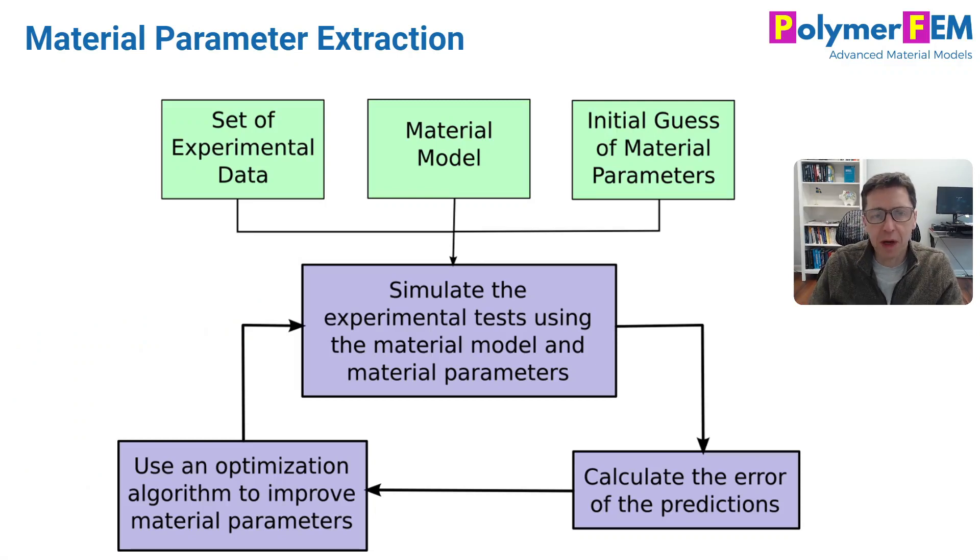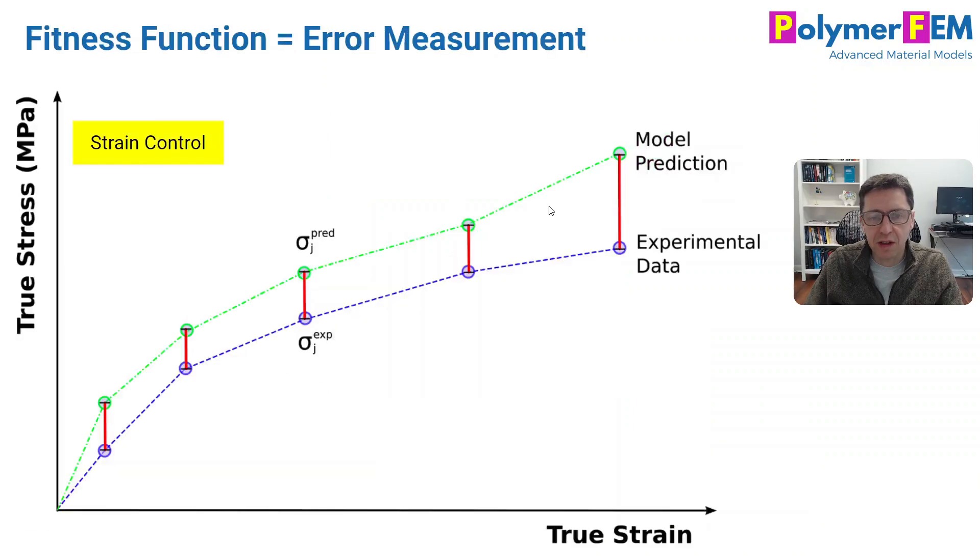Let's start by talking about material parameter extraction software like MCalibration. This software works by selecting a set of experimental data. You select the material model, and the software gives you the initial guess of the material parameters. Then there's an iterative process in which the software simulates the experiments and evaluates how good the predictions were by comparing them to the experimental data. That's where the fitness function comes in, and then it uses optimization to iterate in this cycle.